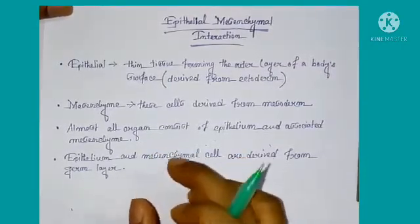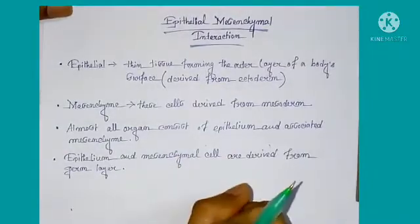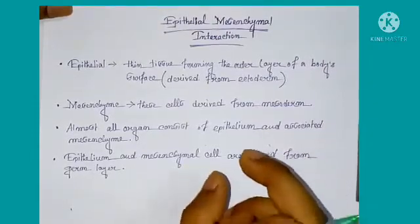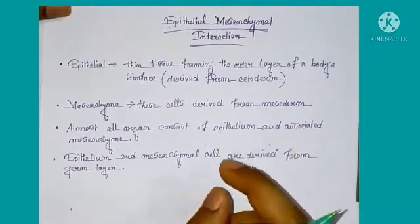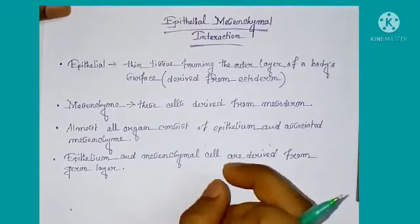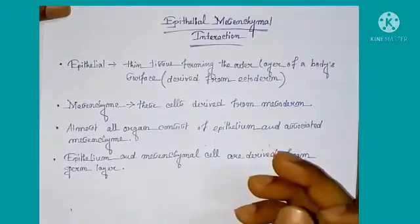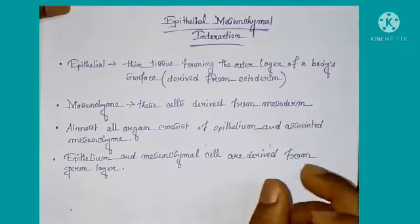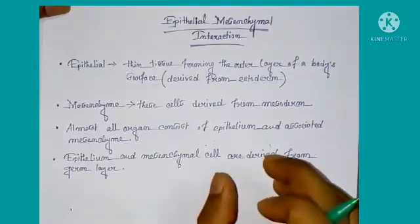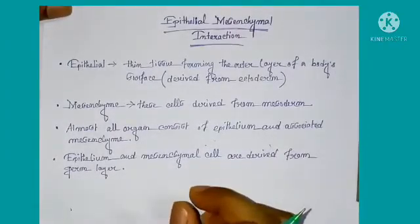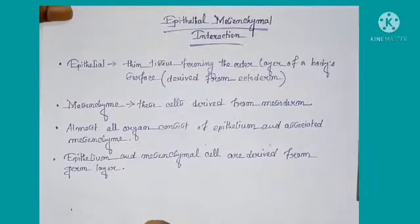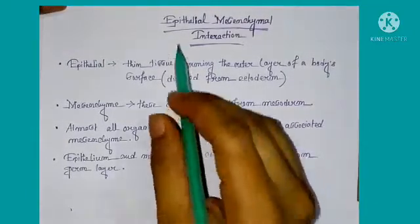Another type of proximate inductive interaction is permissive interaction. In this case, the responder cell is specified to form a particular tissue or cell type. The responder cell only needs permission, and this permission is given through the environment. If the environment is present, the responder cell expresses its fate and forms a particular type of cell. If the environment is not present, the fate of the responder cell does not get expressed and remains in a dormant stage. The next type of interaction is the epithelial-mesenchymal interaction.